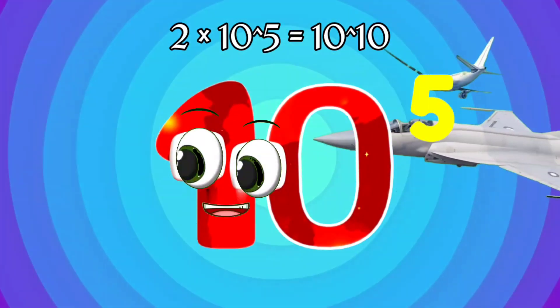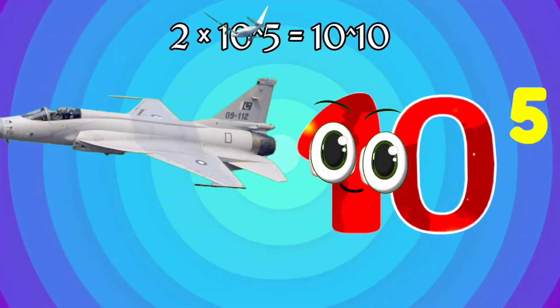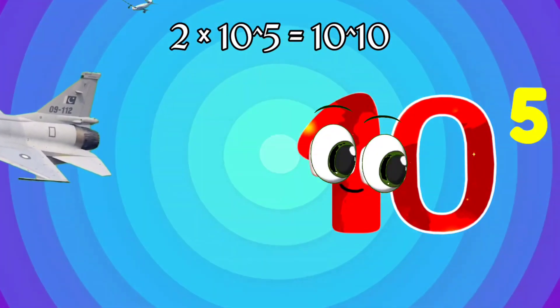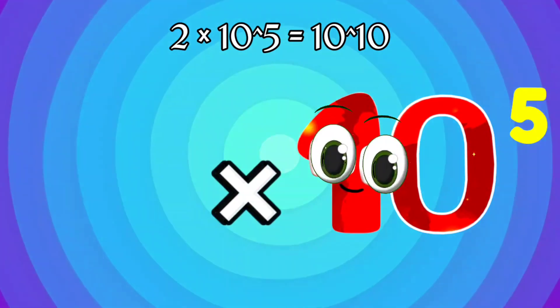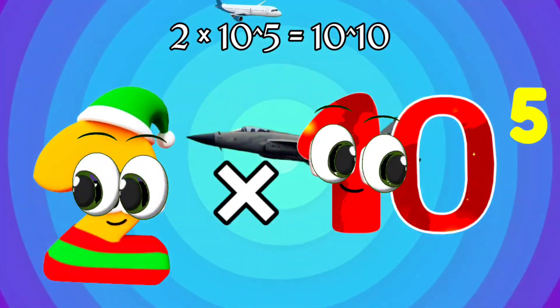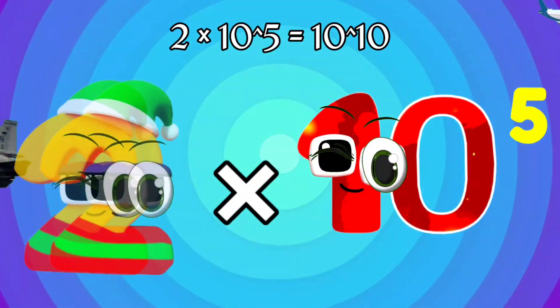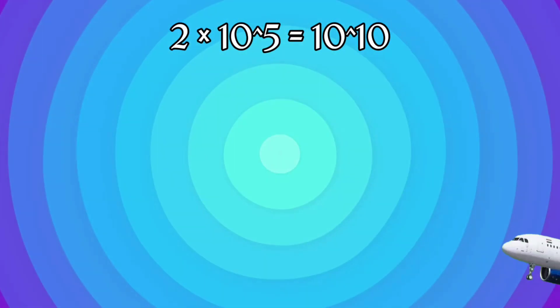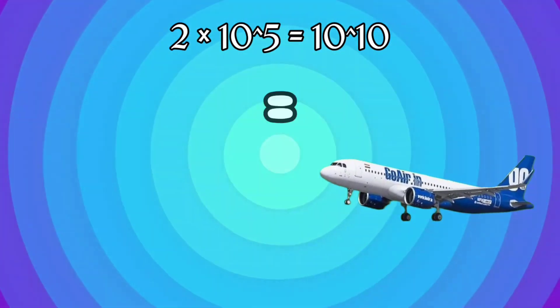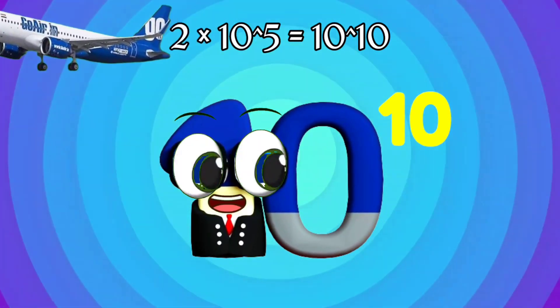I'm 100,000 and I have 5 zeros! Times 2. Equals I'm 10,000 and I've got 4 zeros!